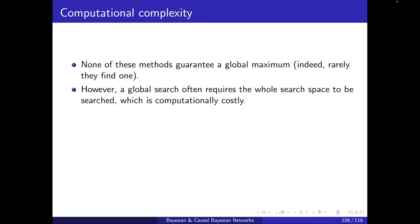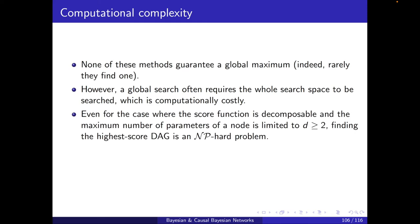Indeed, even for the case where the score function is decomposable and the maximum number of parents of a node is limited to D greater than or equal to 2, finding the highest score DAG is an NP-hard problem. In reality, this is basically a handy property of a function that allows us to reduce the number of computations. This one is just limiting the number of parents. If even if we limit it to 2, say, if each node has at most 2 parents, then still this is an NP-hard problem. If you don't know what is NP-hard, let's just say it's too hard. It's non-polynomial. So that's why we usually have to rely on a local search. We cannot perform a global search if we have many variables.